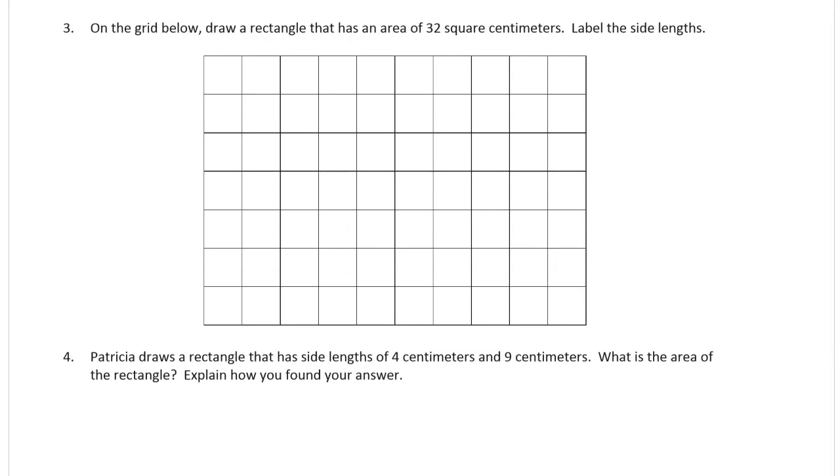On the grid below, draw a rectangle that has an area of 32 square centimeters. Label the side lengths. If you want to think about this, you need 2 factors that equal 32. If you have a chart, you can just find 32 as a product and figure out what 2 factors are.